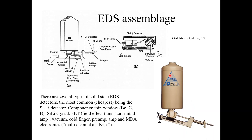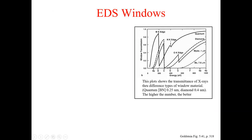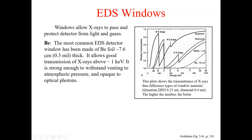Now let's discuss the EDS window and its role. A window allows X-rays to pass through while protecting the detector from light and gases. Here you can see window transmission plotted against energy for different window materials — boron, nitrogen, oxygen, and beryllium.